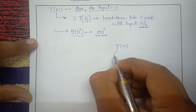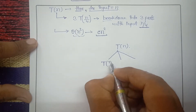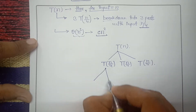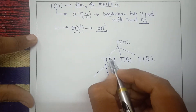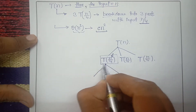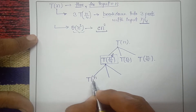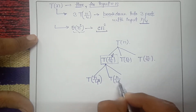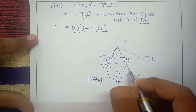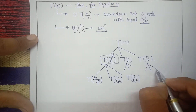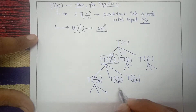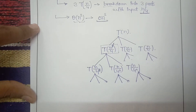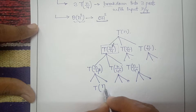So T(n) breaks down into three parts each with input n/4: T(n/4), T(n/4), T(n/4). Each of those parts again breaks down into three parts, but this time the input is one-fourth of n/4, giving T(n/4²). Similarly each of those breaks into three parts with input n/4², and at the next level into three parts with input n/4³.